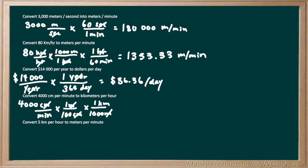Now all we have to do is convert the minutes to hours. We know there are 60 minutes in an hour, so we write 60 minutes on the top over one hour to cancel out the minutes. We're left with units of kilometers per hour. We do 4,000 divided by 100 divided by 1,000 times 60 to get our final answer of 2.4 kilometers per hour.